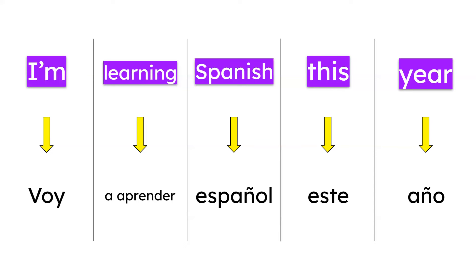So be careful. Whenever you want to say 'I am doing something,' you have two options: are you doing it right now or in the present moment, or are you doing it later, tomorrow, next year? You have to be aware of that, because based on that you're going to use the right structure in Spanish.